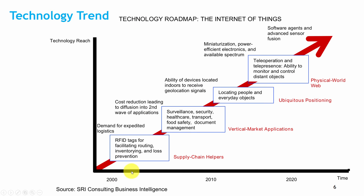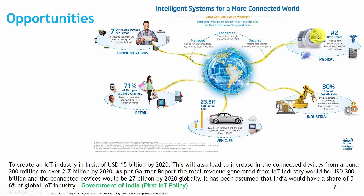Here are technological trends since the 2000s. First, RFID technology came into the market, especially used in the supply chain. Then vertical market applications came — surveillance, security, healthcare, transport, food safety, and management. Around 2010, ubiquitous positioning systems emerged. After that, the physical world wave came with tele-operations and the ability to monitor and control distant objects. Technology trends are now moving toward software regions and advances in subsystems. Looking at opportunities in IoT, by 2027 connected devices per person are predicted to grow significantly, with a 30% annual growth rate on IoT — better than GDP.